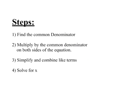So here are your basic steps. You want to first find the common denominator. Multiply both sides by the common denominator. Simplify and combine like terms, and then you want to solve for x. Those are the same basic steps you're going to use every time.